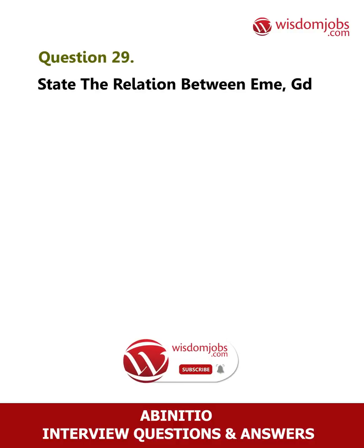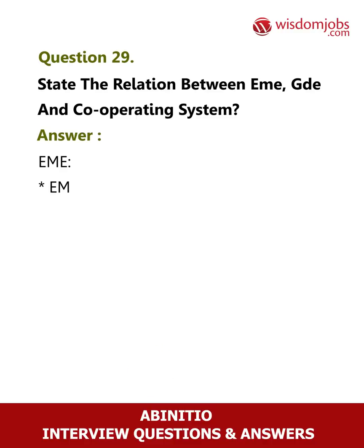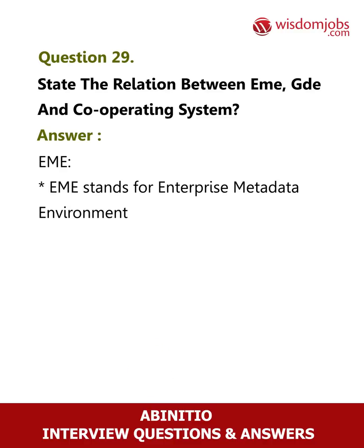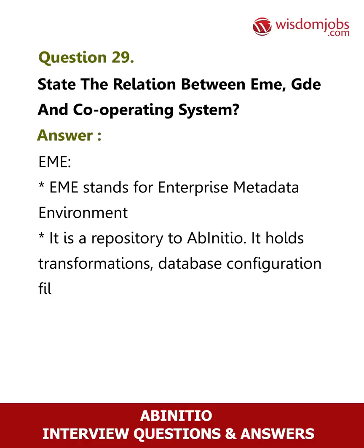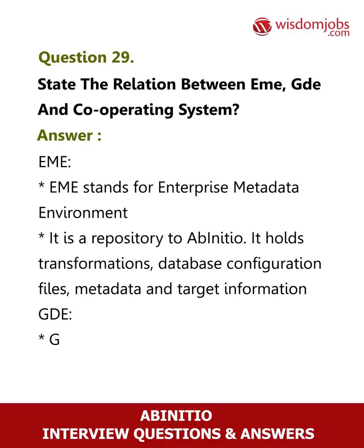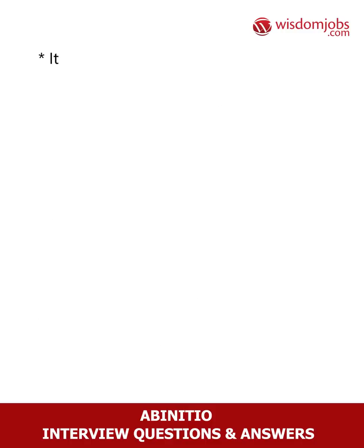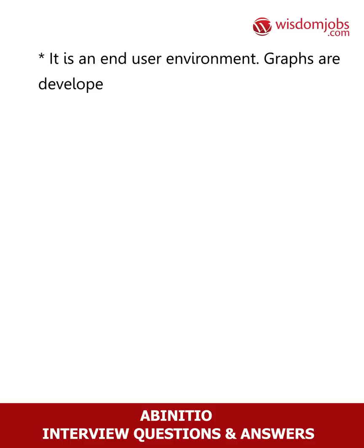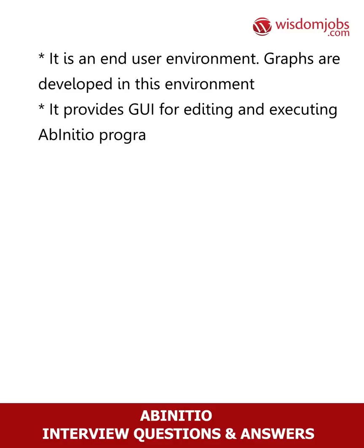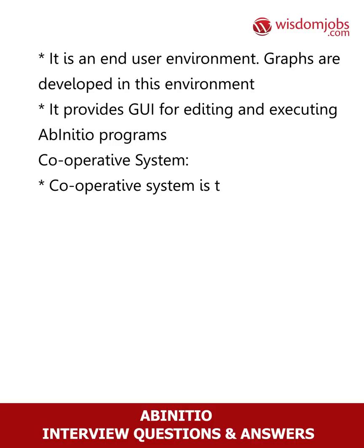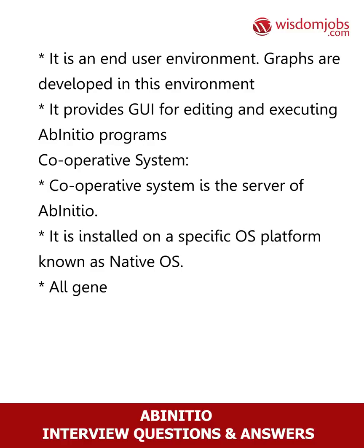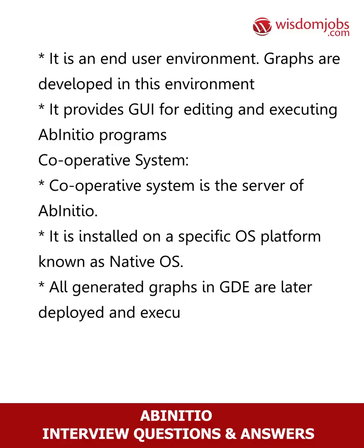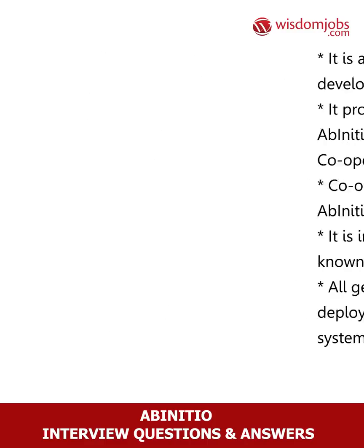Question 29: State the relation between EME, GDE, and the Co-operating System. Answer: EME stands for Enterprise Metadata Environment. It is a repository for Ab Initio — it holds transformations, database configuration files, metadata, and target information. GDE (Graphical Development Environment) is the end-user environment where graphs are developed. It provides a GUI for editing and executing Ab Initio programs. The Co-operating System is the server of Ab Initio, installed on a specific OS platform known as the native OS. All graphs developed in GDE are later deployed and executed in the Co-operating System.